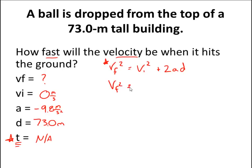So vf squared equals vi squared, and the initial velocity is right here, is 0. So that's going to be 0 meters per second, and that's going to be squared, plus 2 times negative 9.8 meters per second squared times our displacement of 73.0 meters.